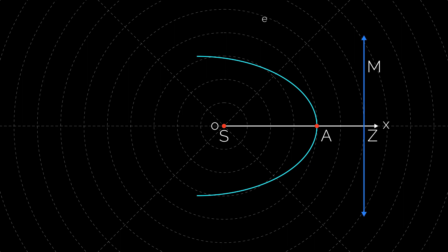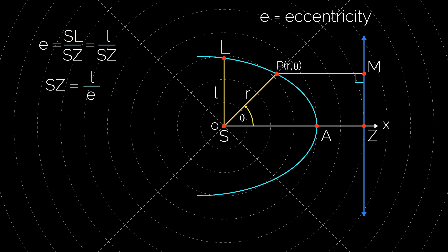Let S be the focus, A be the vertex, ZM the directrix, and e be the eccentricity of the conic. Here S is pole as well as focus. Let P be any point on the curve. If S will be the semi-latus rectum, then e = SL/SZ which is equal to L/SZ, so SZ = L/e.